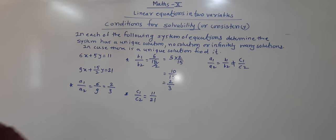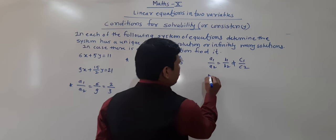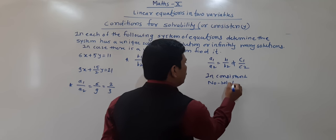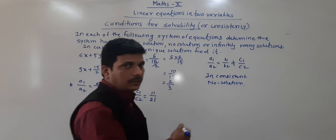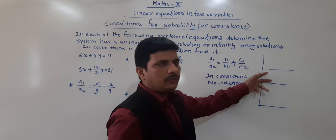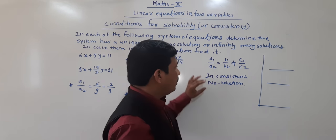From this result — a1/a2 = b1/b2 but not equal to c1/c2 — this is the third condition. So the system of equations has no solution. Why no solution? It is inconsistent. Because we have the third condition where lines are parallel. If lines are parallel, they will not intersect, and if they do not intersect, we get no solution. So there is no solution and the system is inconsistent.